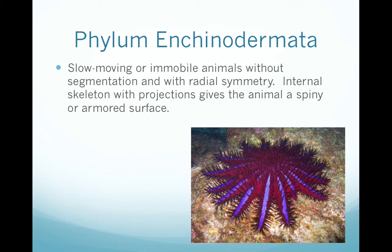Phylum Echinodermata are the prickly animals — very slow-moving or sometimes immobile. They don't have any segmentation but do have radial symmetry. Their internal skeleton has projections, giving them a spiny or armored surface.